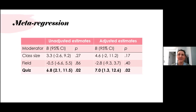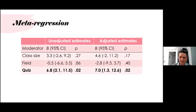Our third moderator — weekly class quizzes — did significantly moderate the flipped class effect. Even after adjusting for class size and field of study, the coefficient for quizzes was 7%.